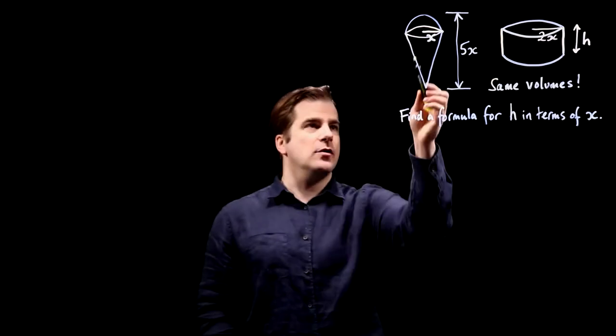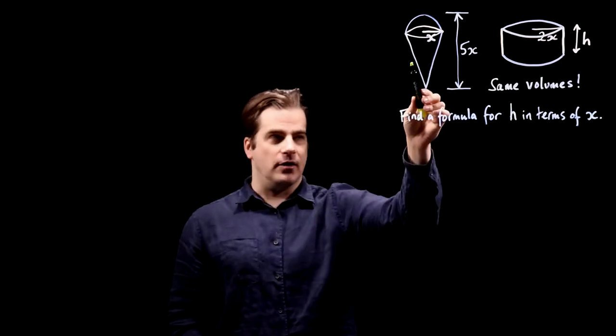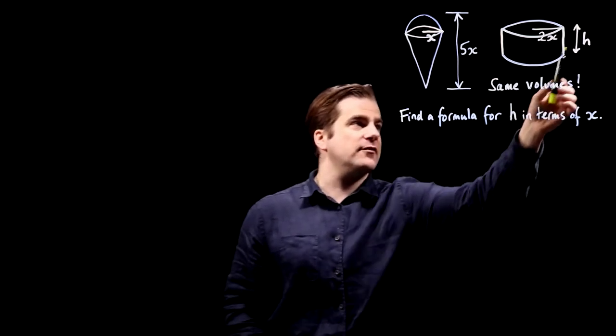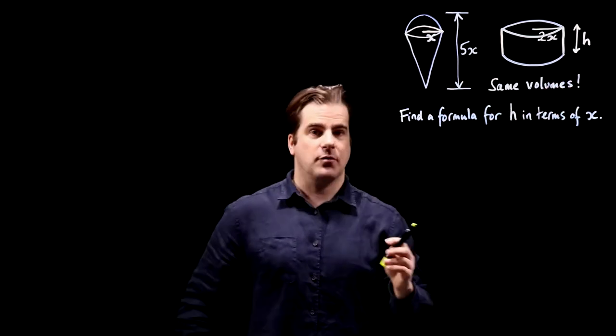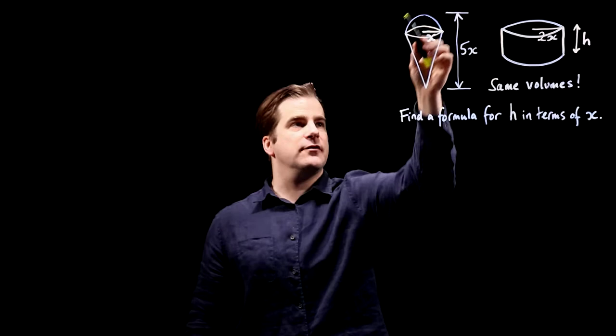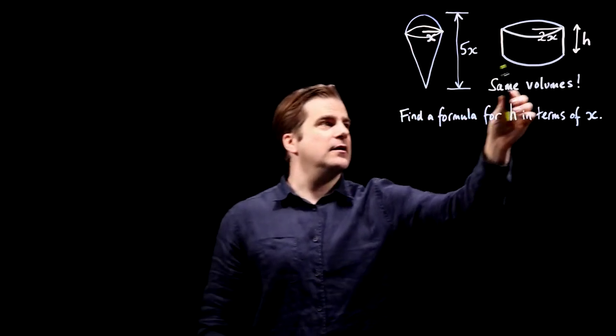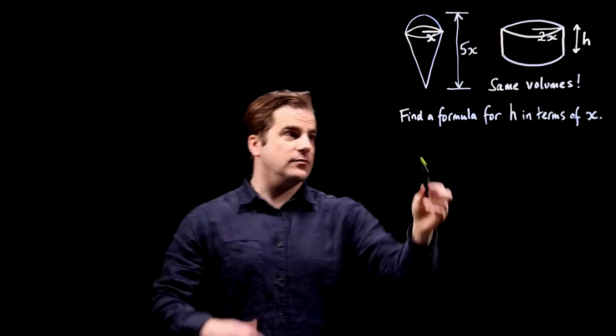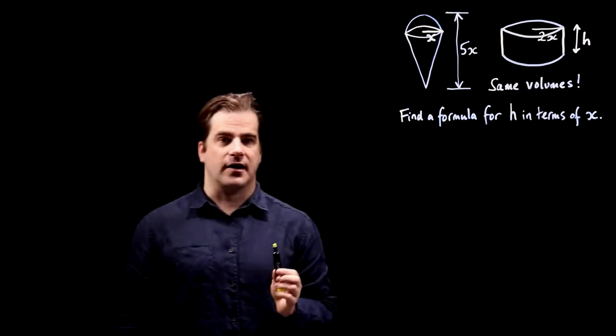So we're told that this ice cream cone and this cylinder have the same volume. We have to find a formula for h in terms of x. So what we need is an expression for the volume of the ice cream cone and an expression for the cylinder, set them equal to each other and then we'll get the formula for h in terms of x.